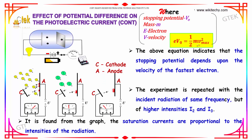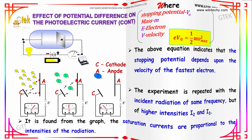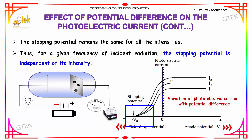The equation eV₀ = ½mv²_max indicates that the stopping potential depends upon the velocity of the fastest electron. The experiment is repeated with incident radiation of the same frequency but of higher intensities i2 and i3. It is found from the graph that the saturation currents are proportional to the intensities, but the stopping potential remains the same for all intensities. Thus, for a given frequency of incident radiation, the stopping potential is independent of intensity.